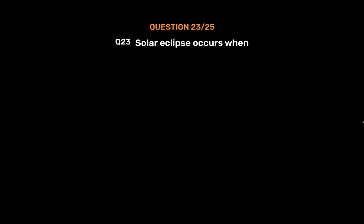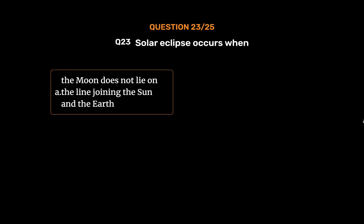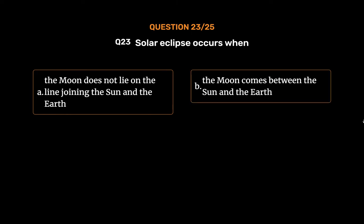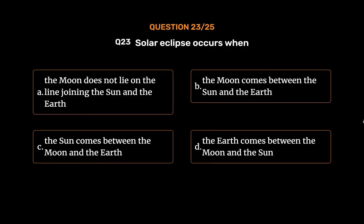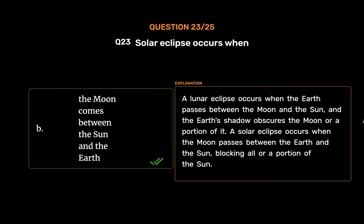Question No. 24: Solar eclipse occurs when — Option A: The moon does not lie on the line joining the sun and the earth, Option B: The moon comes between the sun and the earth, Option C: The sun comes between the moon and the earth, Option D: The earth comes between the moon and the sun. The correct answer is Option B. A lunar eclipse occurs when the earth passes between the moon and the sun, and the earth's shadow obscures the moon. A solar eclipse occurs when the moon passes between the earth and the sun, blocking all or a portion of the sun.